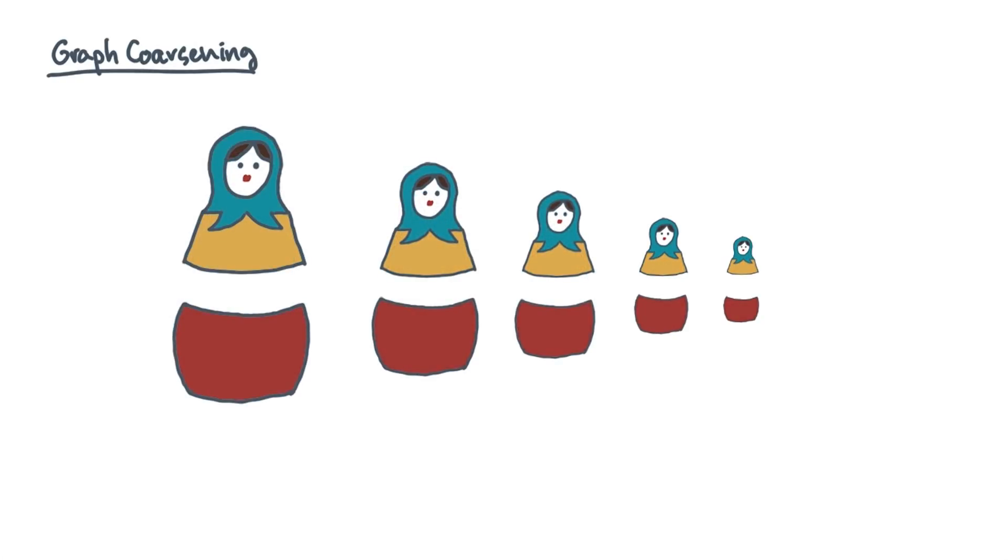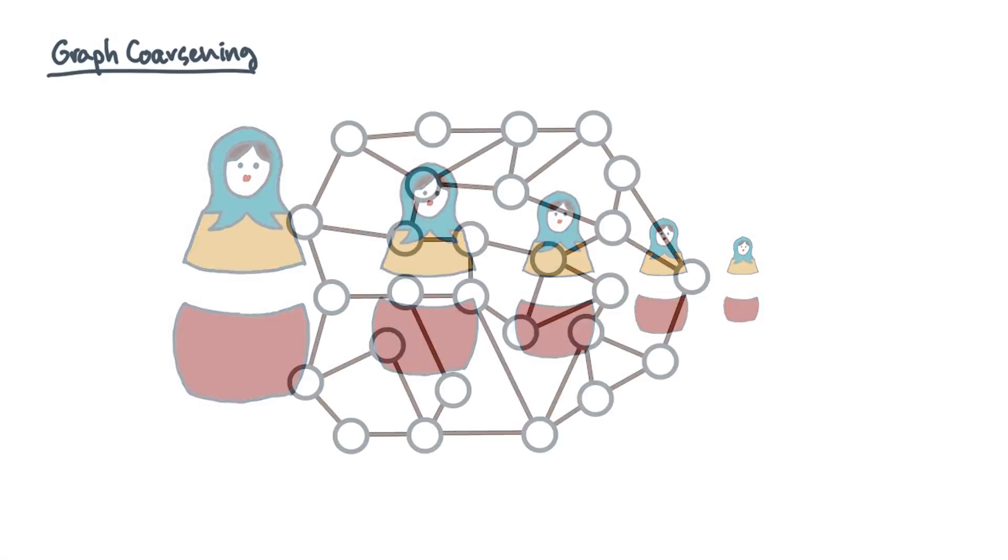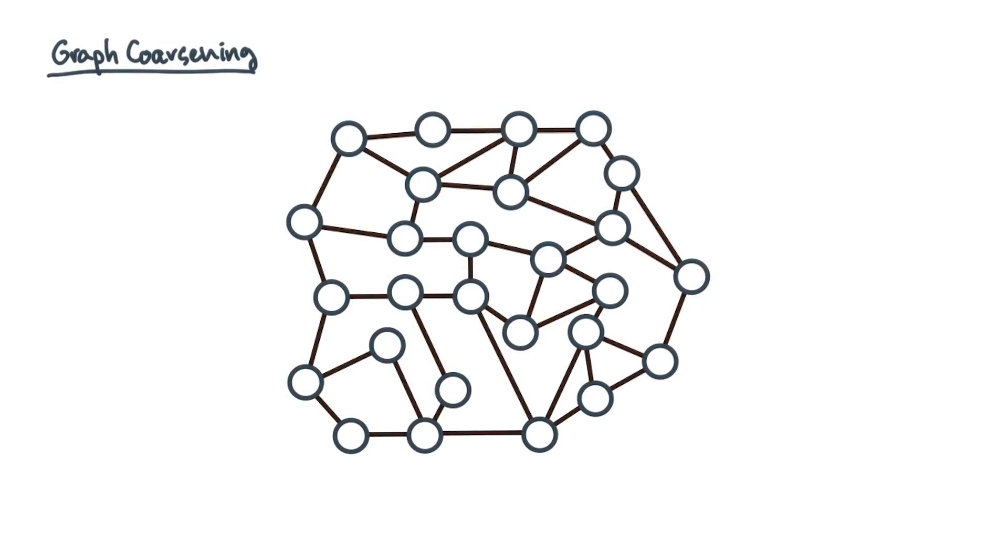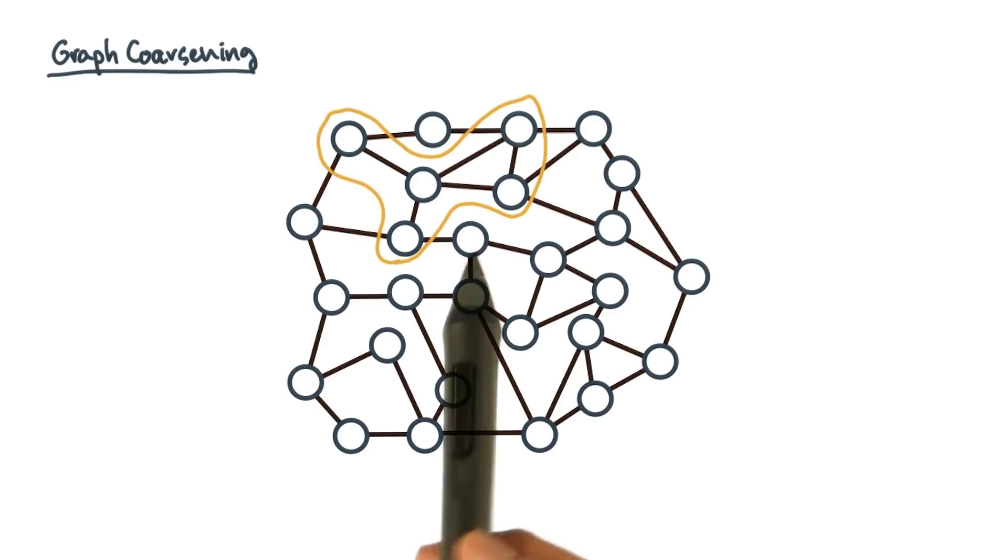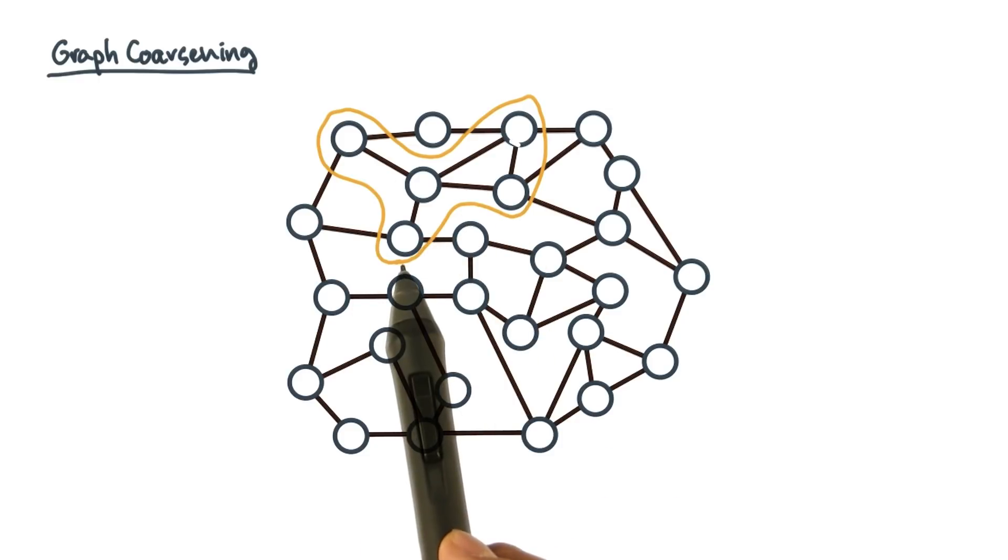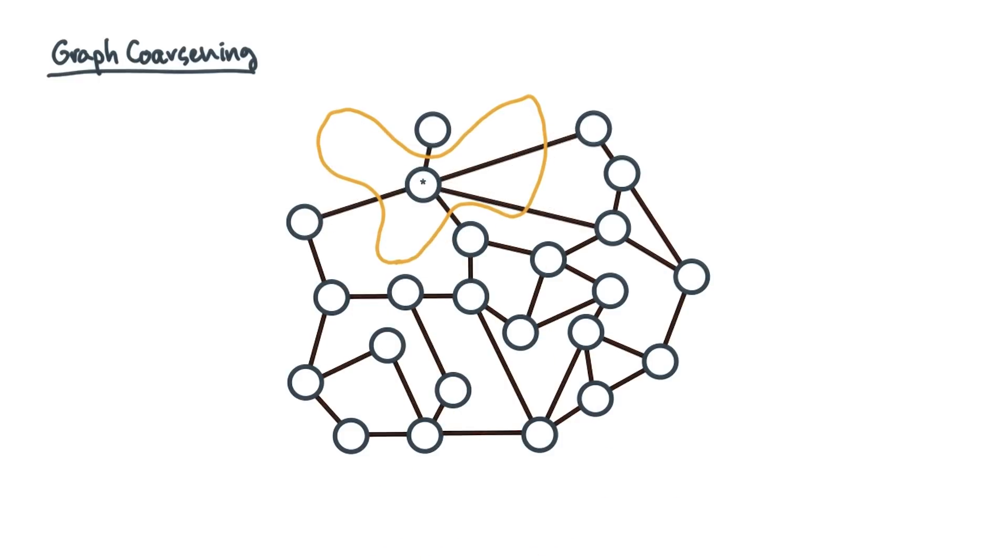So that's the concept, but how do you actually coarsen a graph? Most schemes have the following flavor. First, identify at least one subset of the vertices to collapse or to merge. For instance, here's a subset of five vertices. I'm going to replace this subset with a single super vertex.